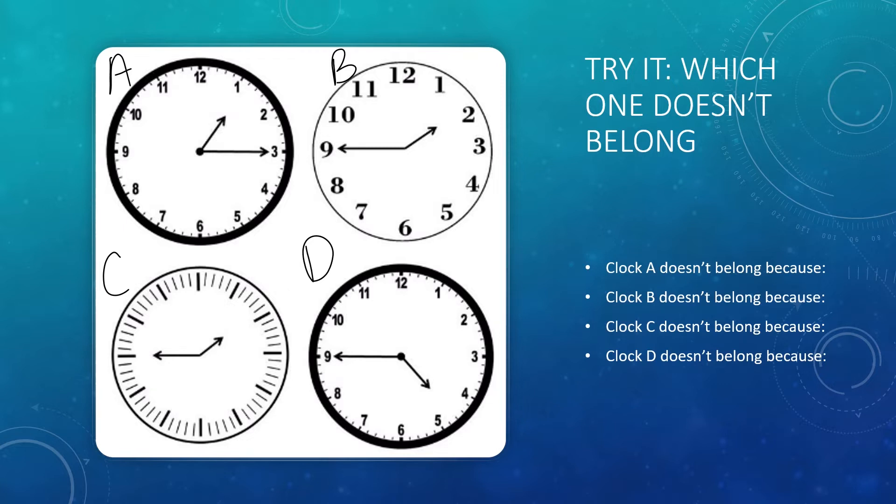I'm going to go with clock C. I'm going to say clock C does not belong because there are no numbers on the clock face. Do you agree? Do you disagree? You know what? I'm also going to go with clock B. I'm going to go with clock B and say it doesn't belong because there are no lines on the clock face anywhere in between the numbers. That's why clock B does not belong.